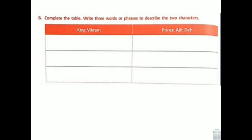As you do this part of the exercise, recollect what I have taught you in this passage. Now we are coming to the next part — you have to complete the table. You have to write three words or phrases. Phrases — what do you mean by phrases? P-H-R-A-S-E-S — what is the meaning of phrases, children?